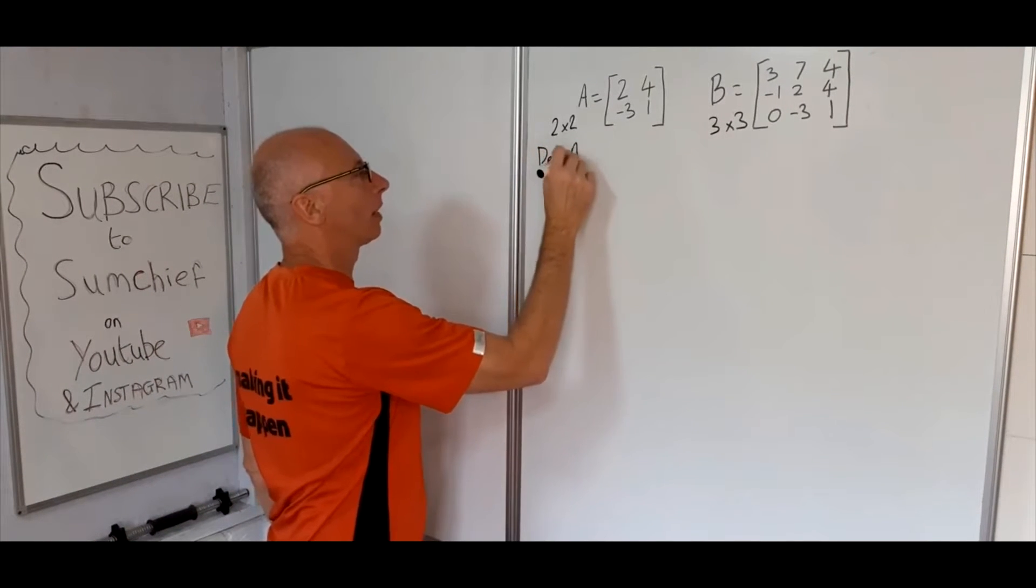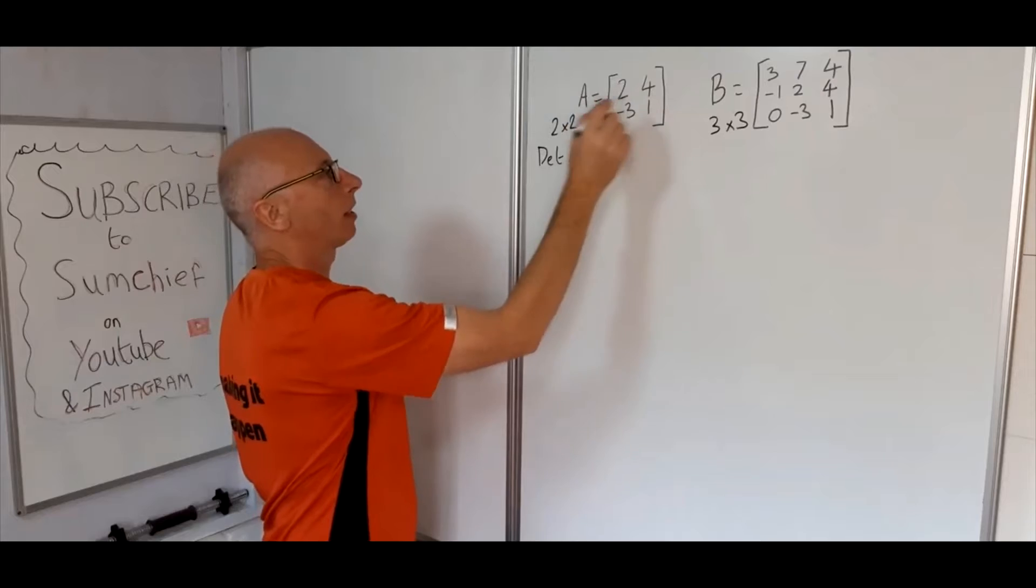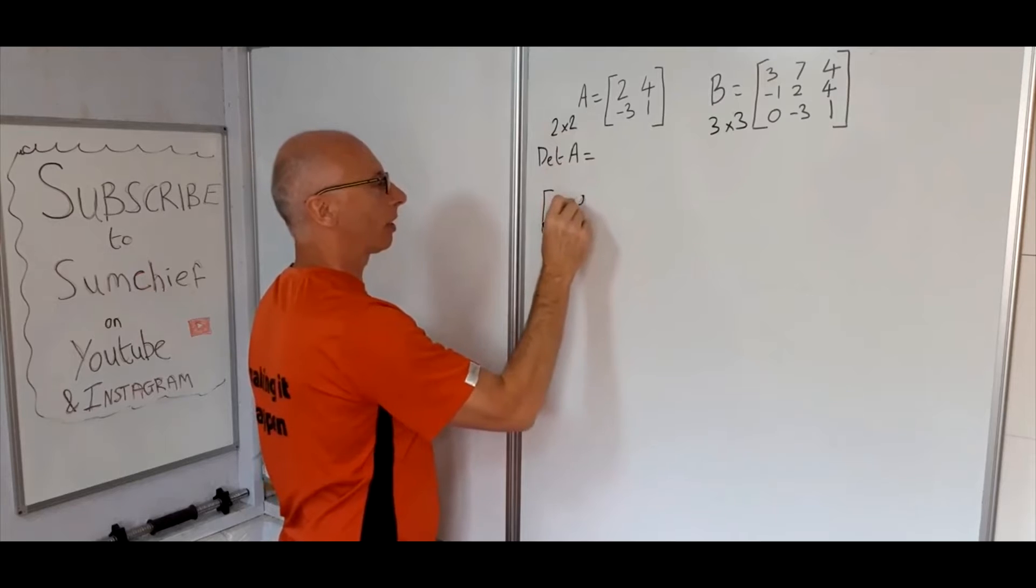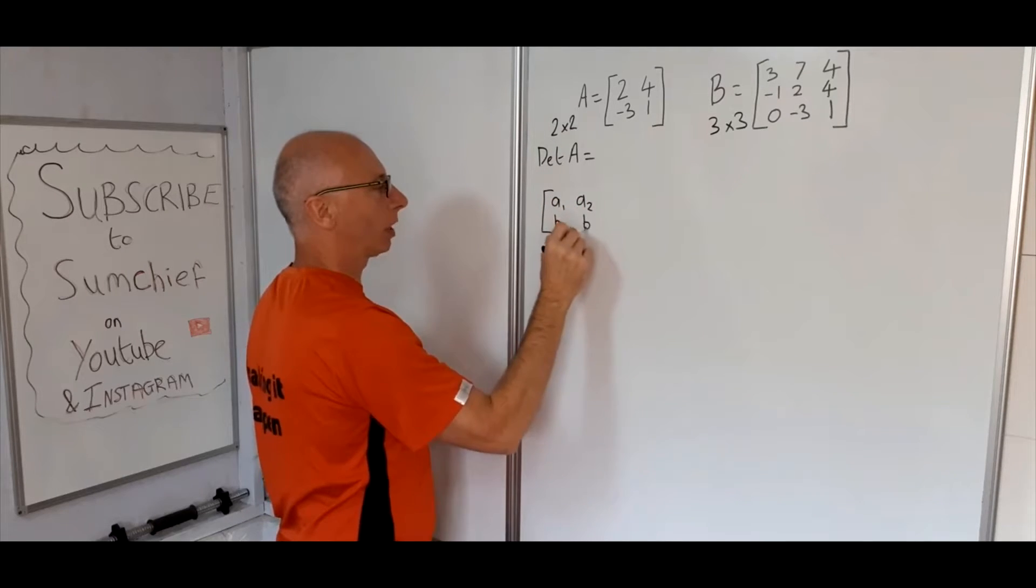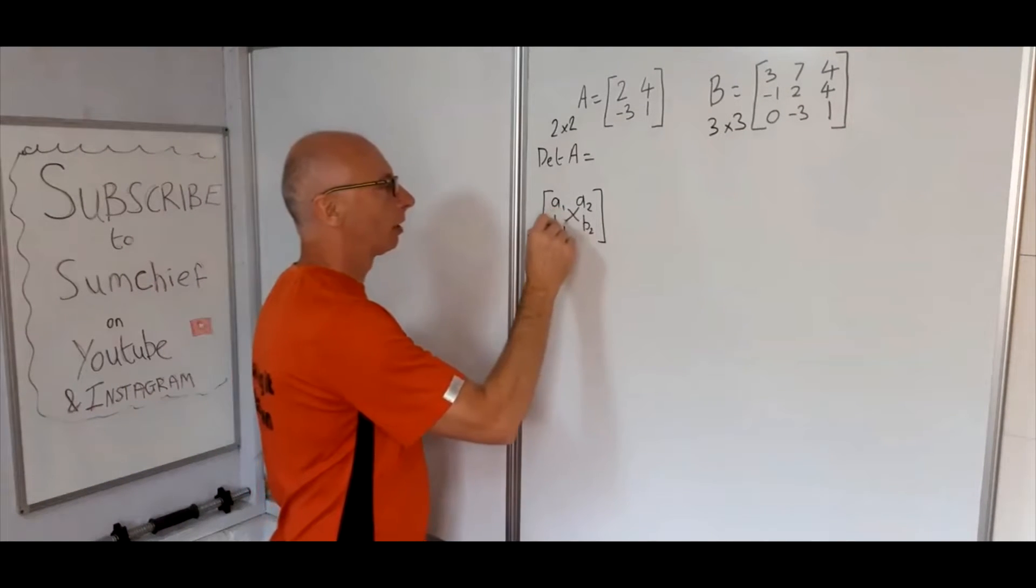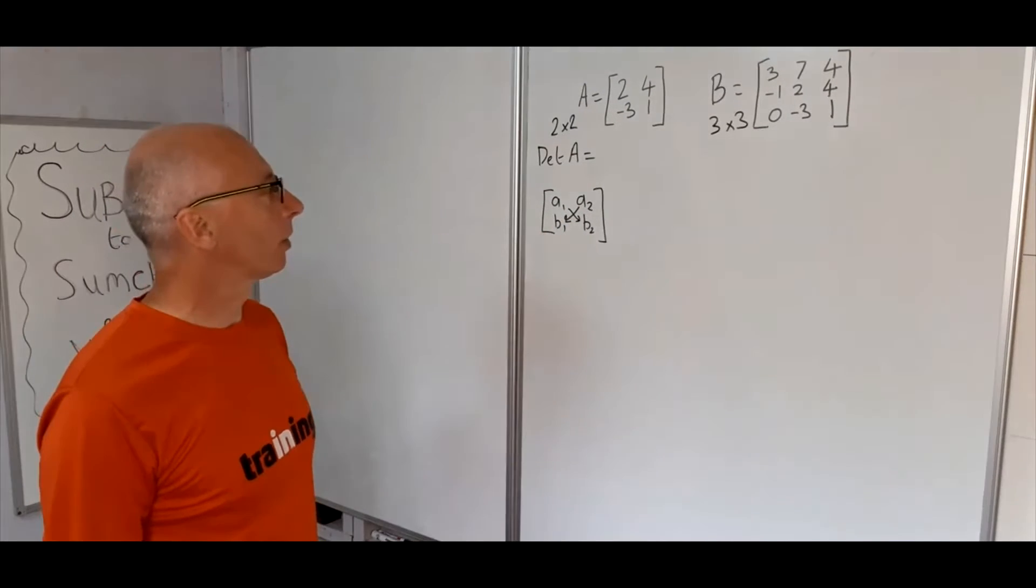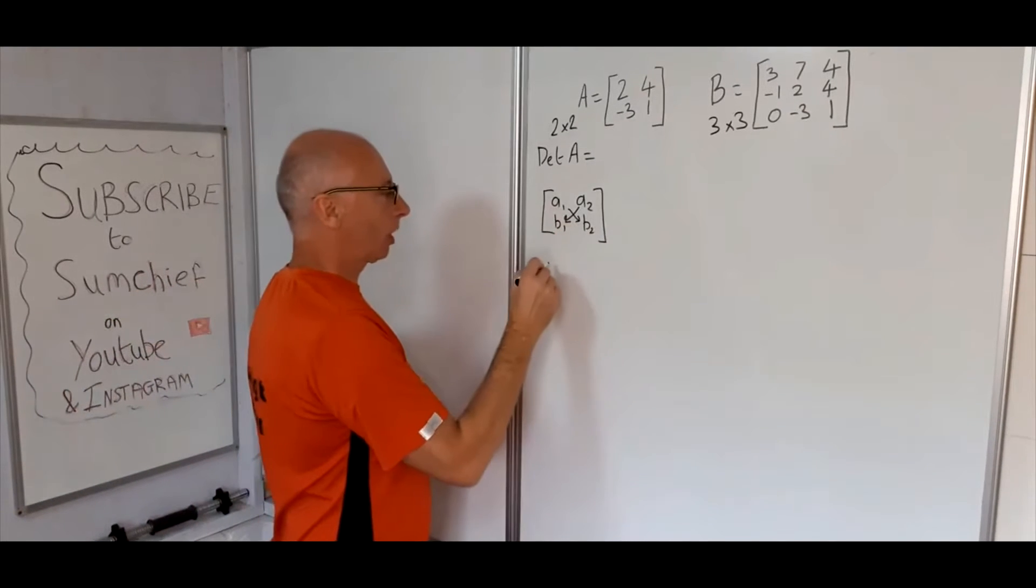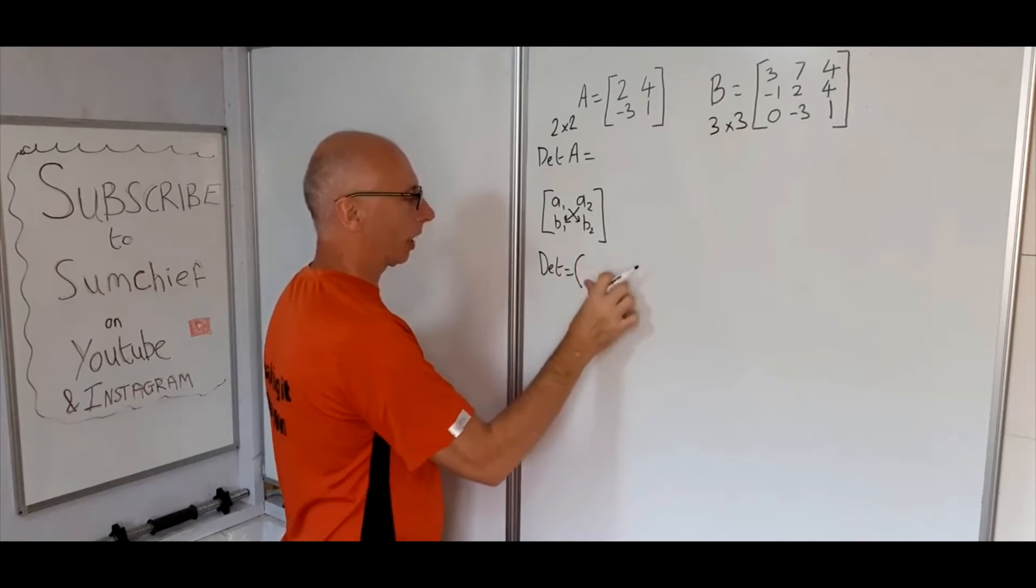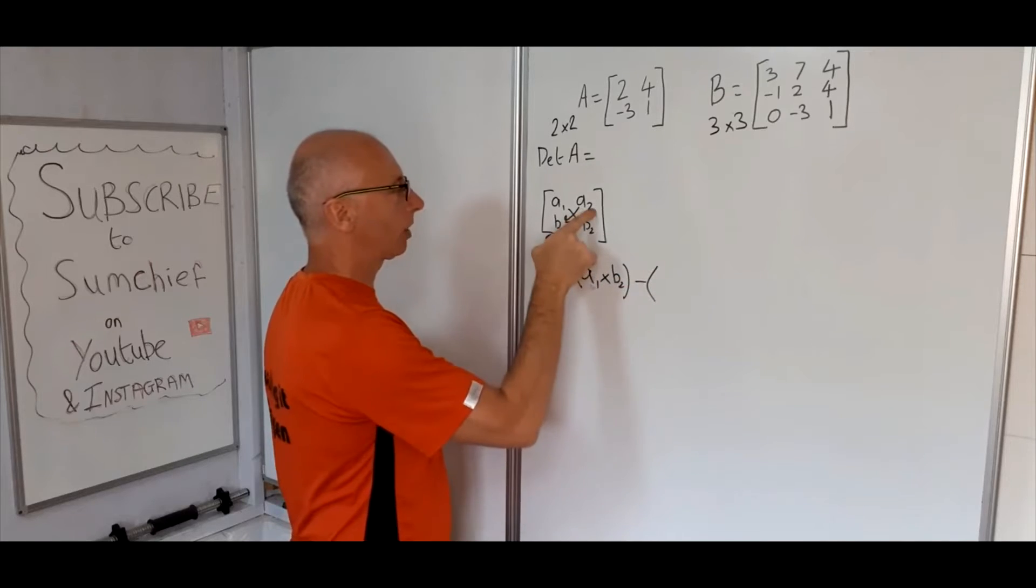So determinant of A, so that is worked out by this particular formula. So what we do is we'll letter each one of the units inside there, we'll call it A1, A2 and then B1, B2. And then what we do is draw a little cross in the middle. What we do is now we multiply the crosses on the diagonals. So A1 times B2, so determinant equals, sorry lowercase a, A1 times B2 minus A2 times B1.